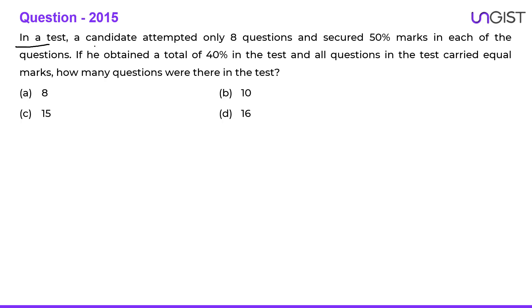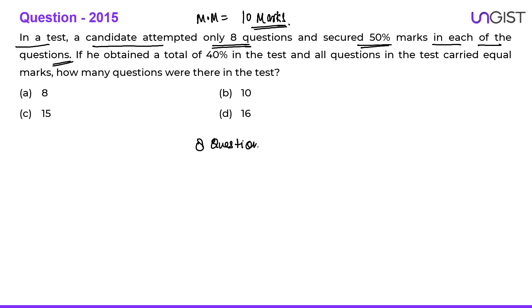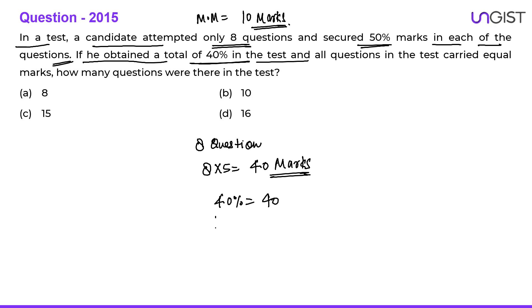Next question: in a test, a candidate attempted only 8 questions and secured 50 percent marks in each question. Let us assume the maximum marks for every question was 10 marks. If the candidate attempted 8 questions and secured 50 percent in every question, he got 5 marks per question, so total he got 40 marks. And if he obtained a total of 40 percent in the test, then 40 percent equals 40, so 100 percent equals 100 — the total marks for the entire test is 100.